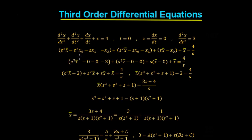Then we set our initial conditions. We know that at t = 0, x = dx/dt = 0, and d²x/dt² = 3. So x₀ = 0, x₁ = 0, and x₂ = 3. Substituting into the equation gives us s³x̄ minus 0, minus 0, minus 3 for those terms.